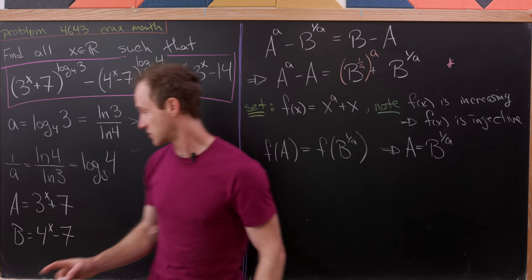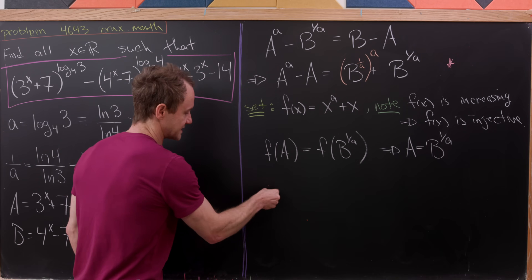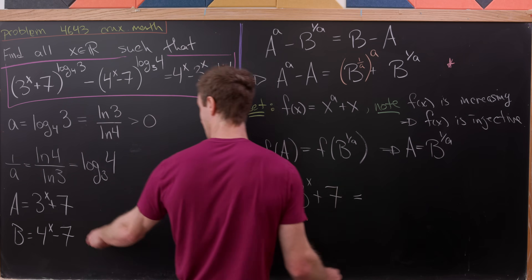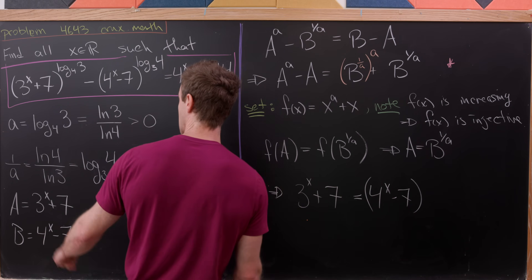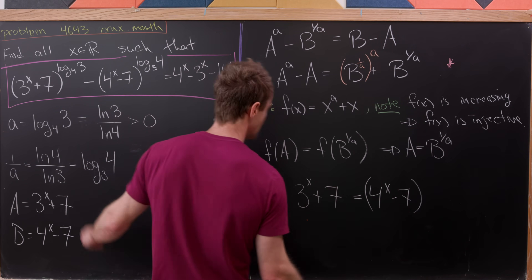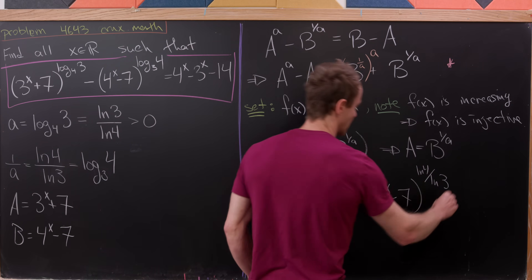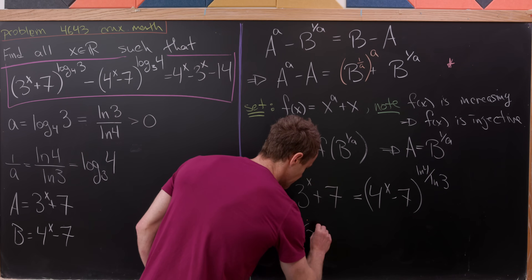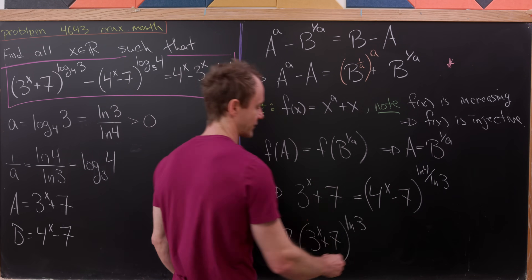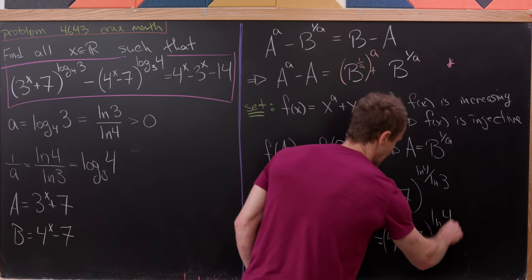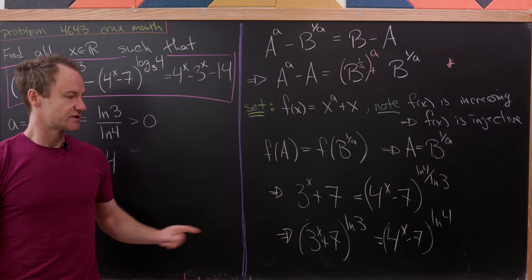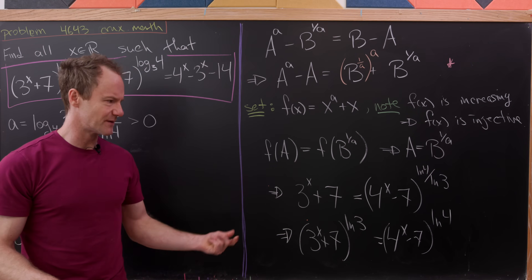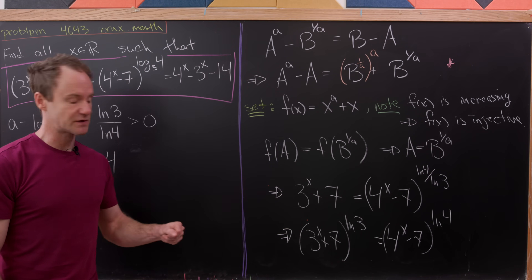Now we can rewrite that in terms of what we have. Capital A is 3 to the x plus 7, and capital B to the 1 over a is 4 to the x minus 7 to the power natural log of 4 over natural log of 3. Raising both sides to the power natural log of 3 gives us: 3 to the x plus 7, all to the power natural log of 3, equals 4 to the x minus 7, all to the power natural log of 4. We've taken our original equation and turned it into something hopefully a little easier to solve.